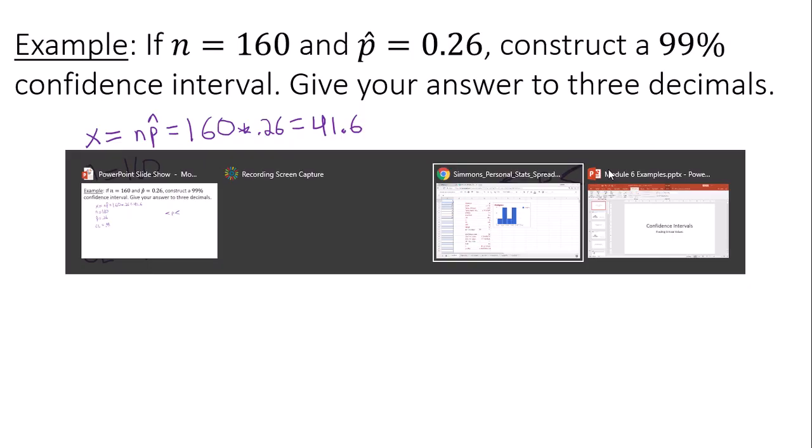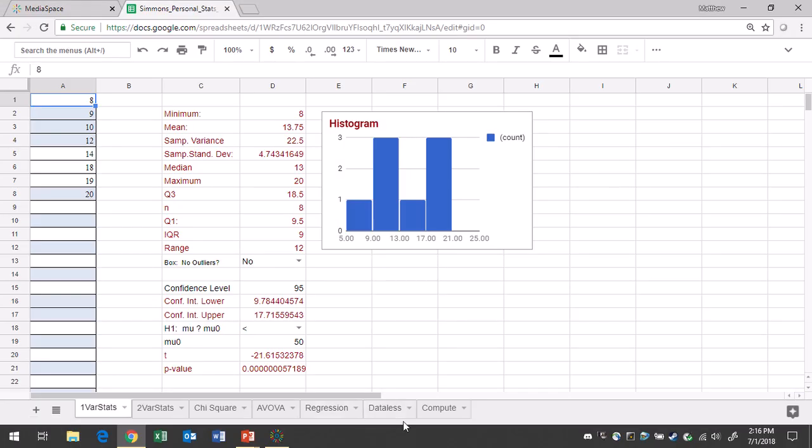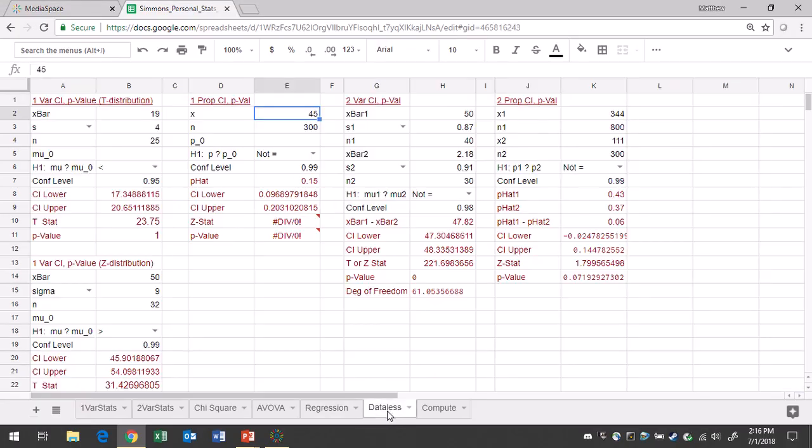Let's go to Google Sheets. In Google Sheets, you'll go to the data list tab, and then you'll go to the one proportion confidence level region, columns D and E.